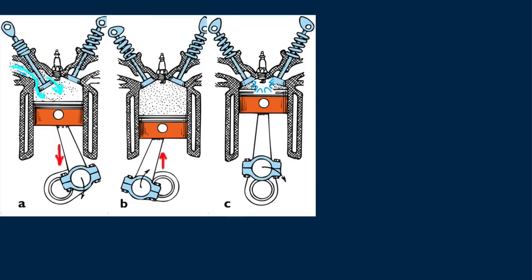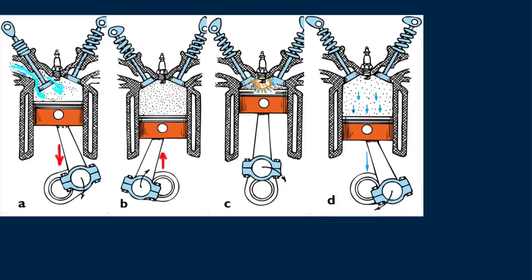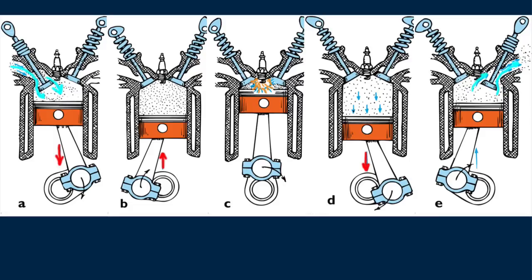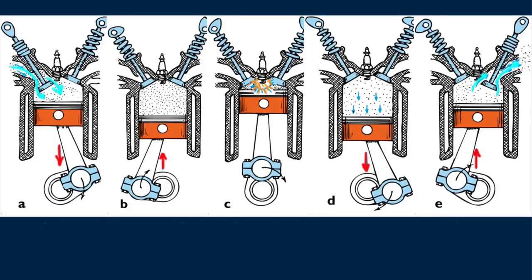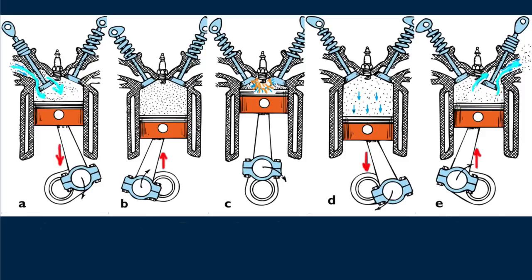The spark plug fires, ignites the mixture, which raises it to a high temperature. Expansion pushes the piston downward. That's the power stroke. The burned gases exit the open exhaust valve as the piston moves upward. Then the intake valve opens and the cycle repeats.